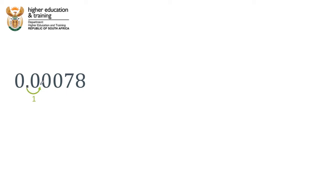So what happens if we now have a smaller number — a number less than 1? Can we do the same thing to make it a little bit easier to read and work with? If we move the decimal point one place to the right, that's the same as multiplying this number by 10. So to keep the value of the number the same, we need to compensate by dividing the number by 10 to the power 1.